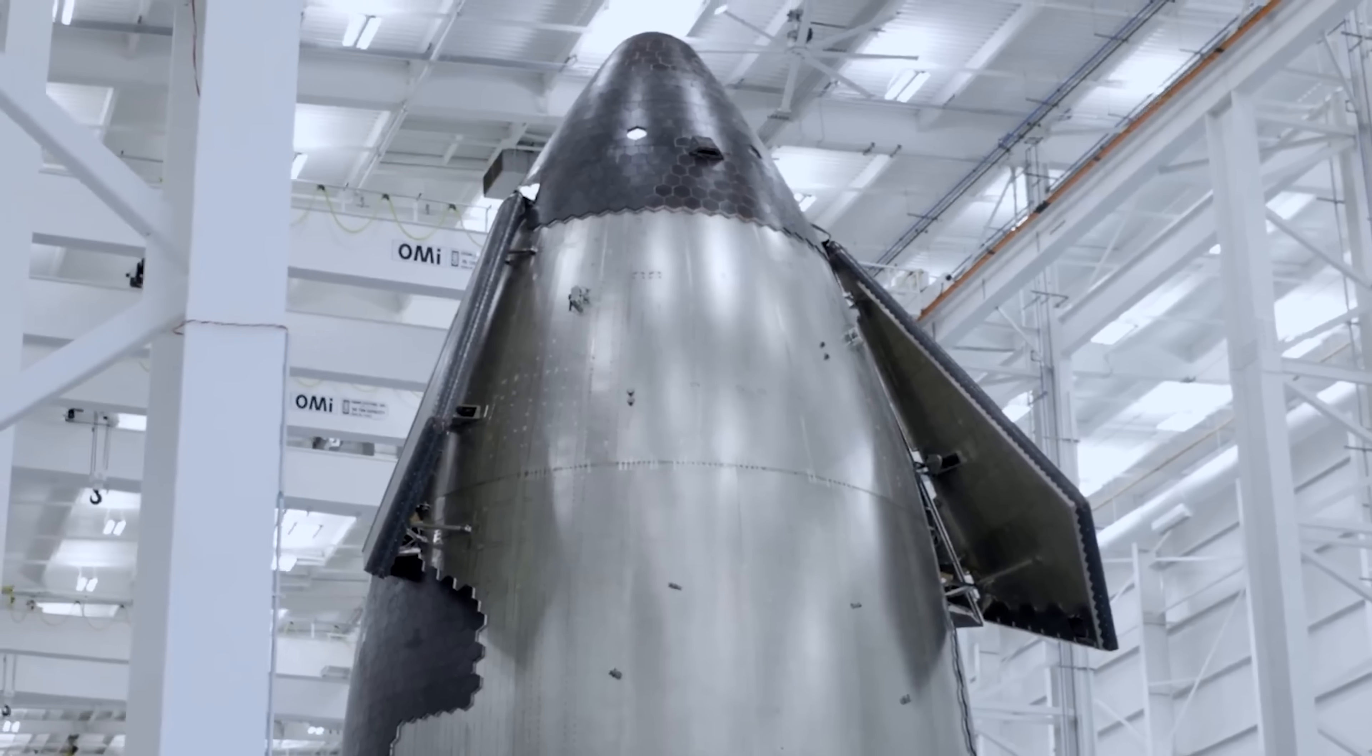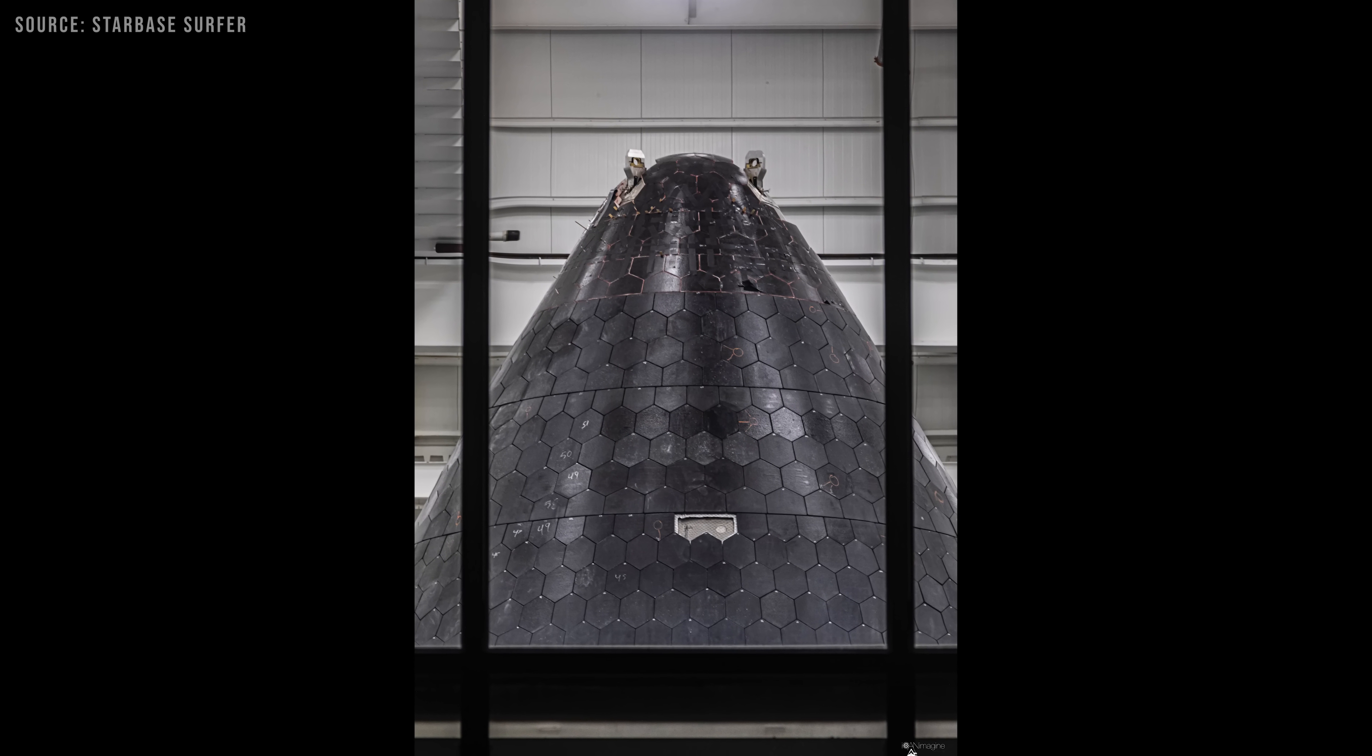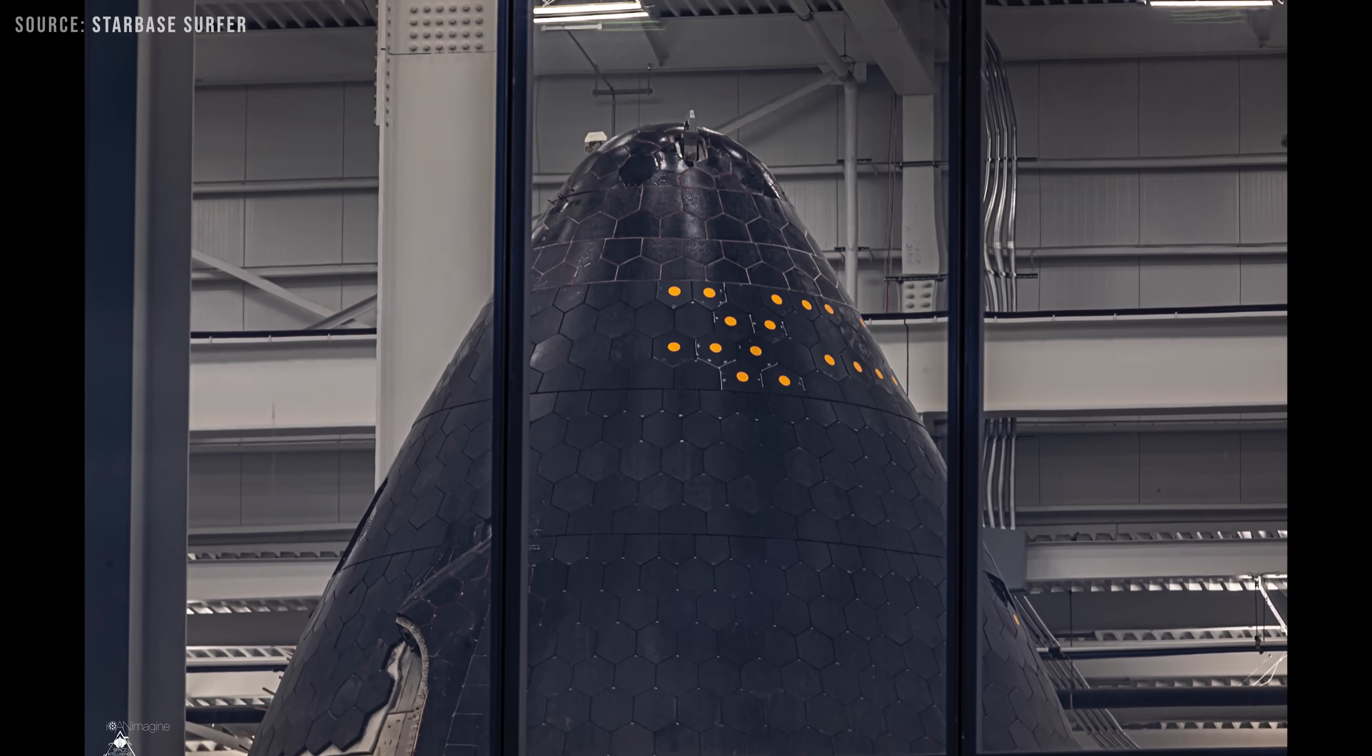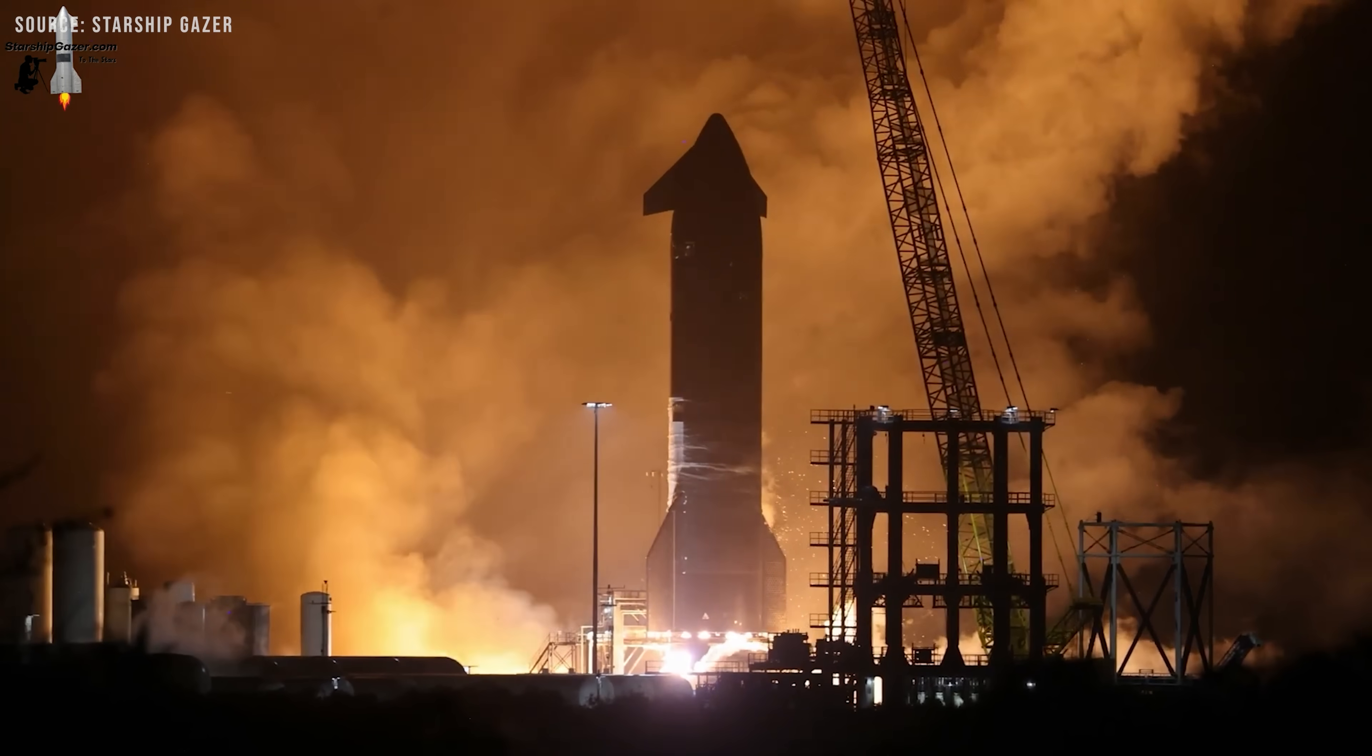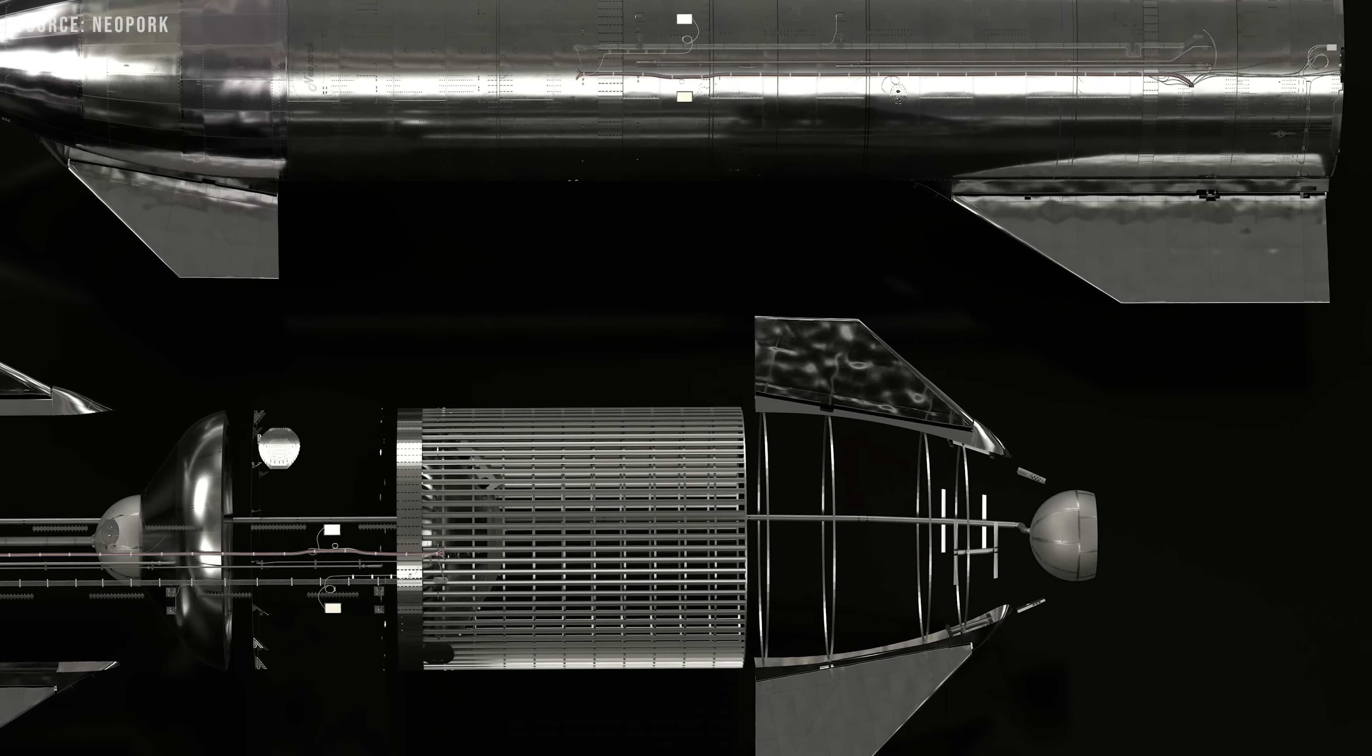Unlike earlier versions, these hooks likely aren't designed to lift the entire vehicle. What's clever is how minimal their impact is on the heat shield. Once the hooks are removed, it seems only a single thermal protection tile needs to be installed over each one, significantly simplifying post-assembly heat shield work. It's not visible in the current picture, but inside the nosecone will be one of Starship's most important internal components, the header tanks.